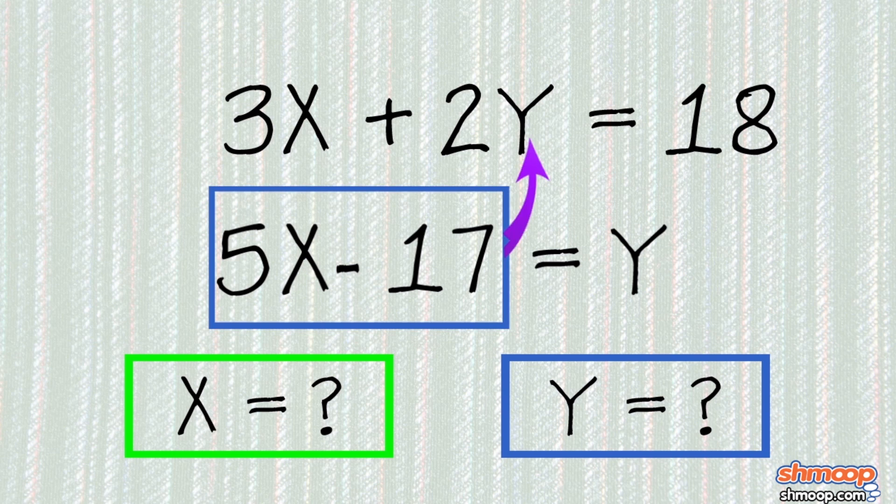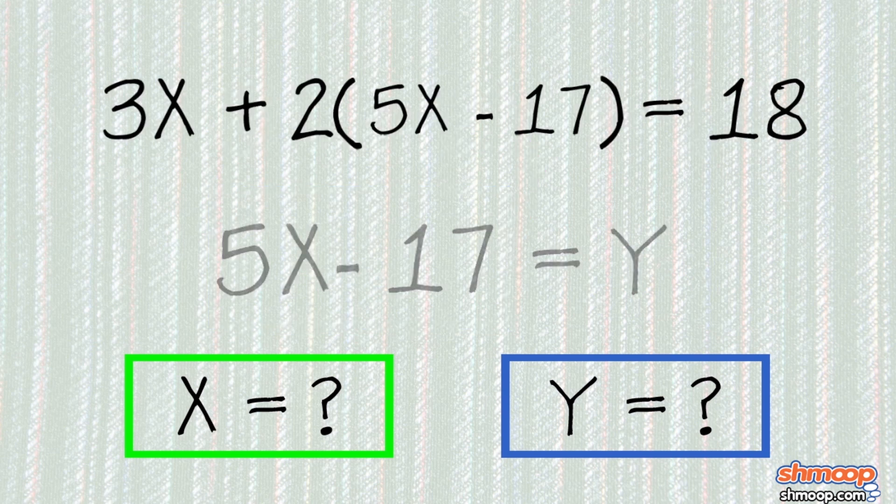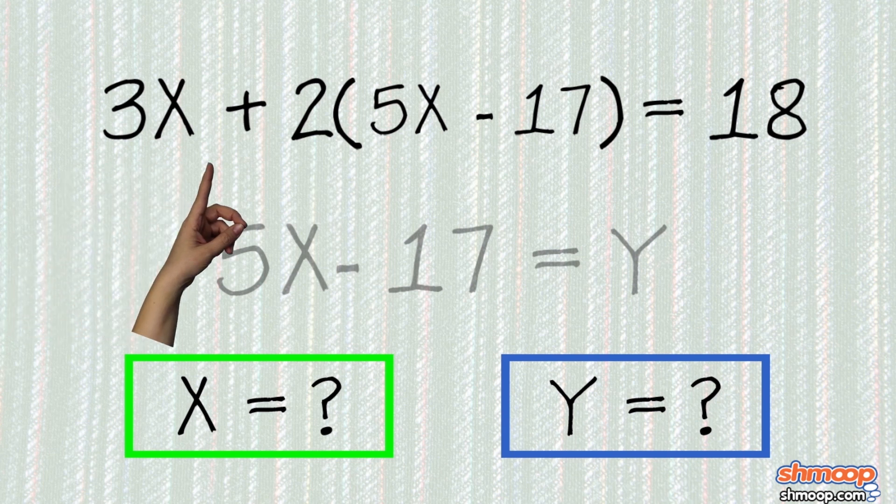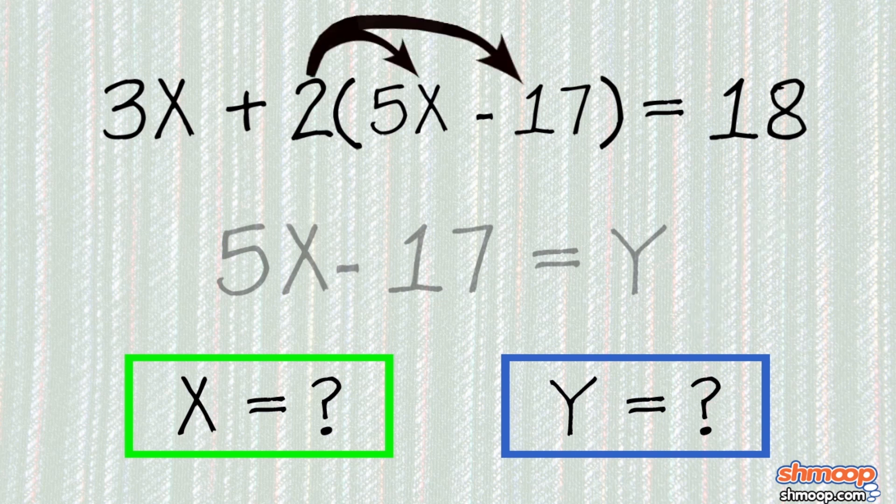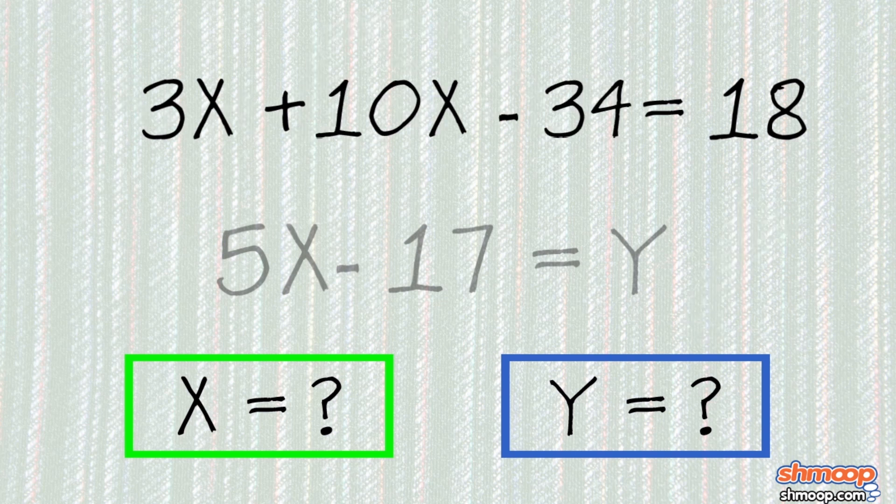From there, we can take the quantity 5x minus 17 and plug it into the y term in the first equation. So, that gives us 3x plus 2 times the quantity 5x minus 17 equals 18. Distribute the 2, and this simplifies to 3x plus 10x minus 34 equals 18.